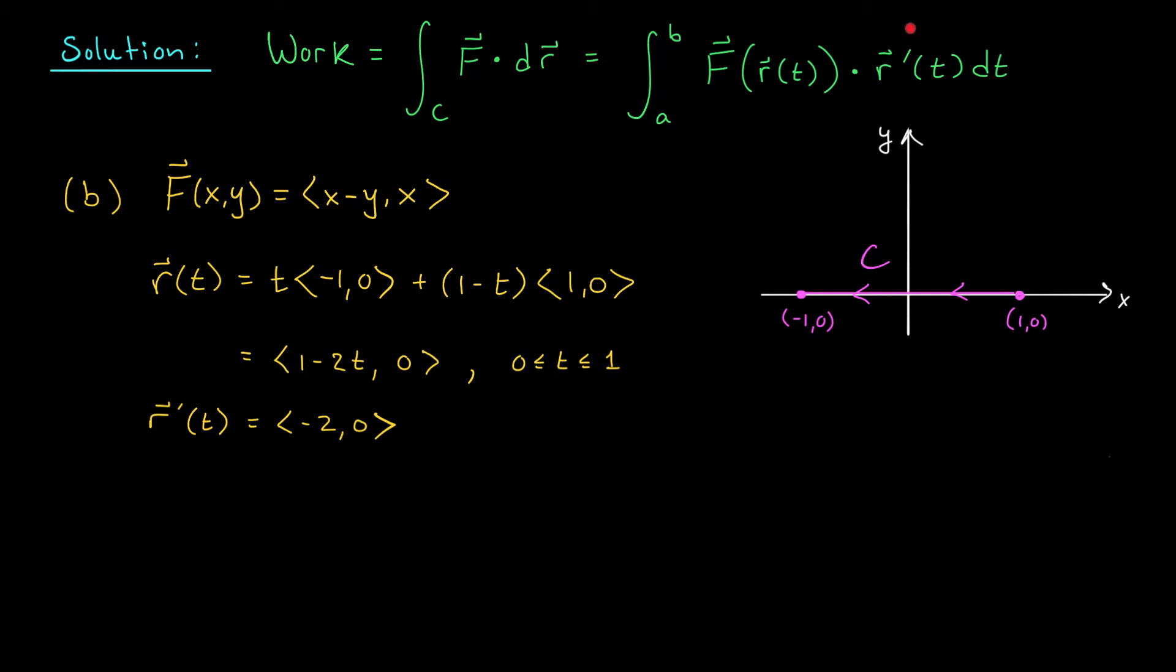All right, let's compute our work by evaluating this integral. Our work is the integral from 0 to 1 of F(r(t)), so that gives me <1-2t-0, 1-2t>. And then I take the dot product with my derivative, the dot product of <-2, 0> dt. If I expand the dot product, I get the integral from 0 to 1 of 4t-2 dt.